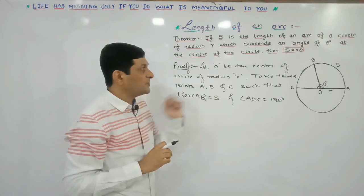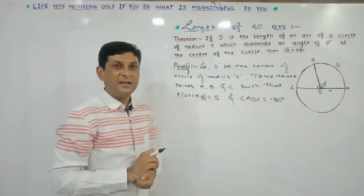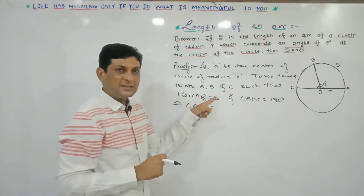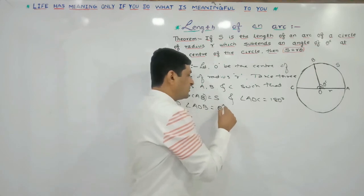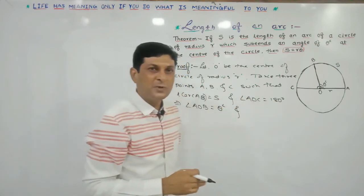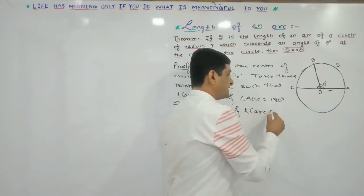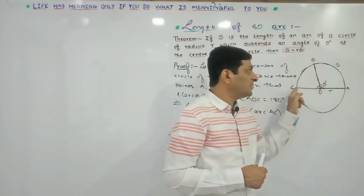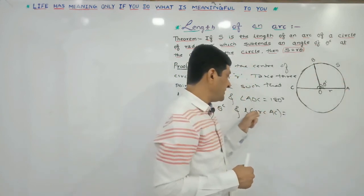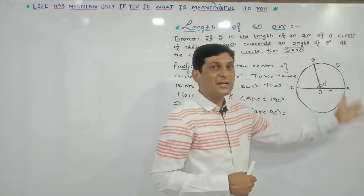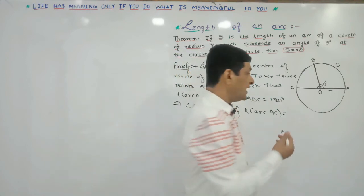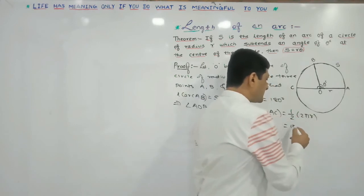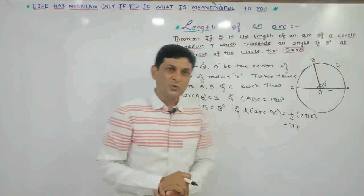Since arc AB has length S, according to the given condition this arc subtends an angle of theta radian at the center. So angle AOB equals theta radian. Now since angle AOC equals 180 degrees, arc AC is nothing but half of the circumference. Total circumference is 2πR, so arc AC equals half of 2πR, which gives us πR.